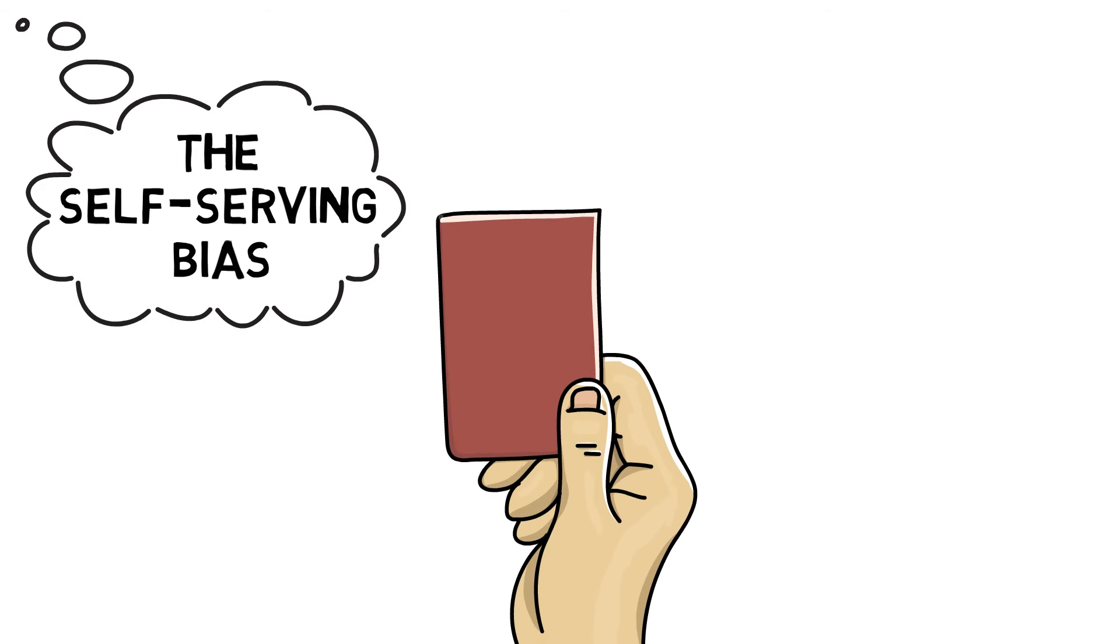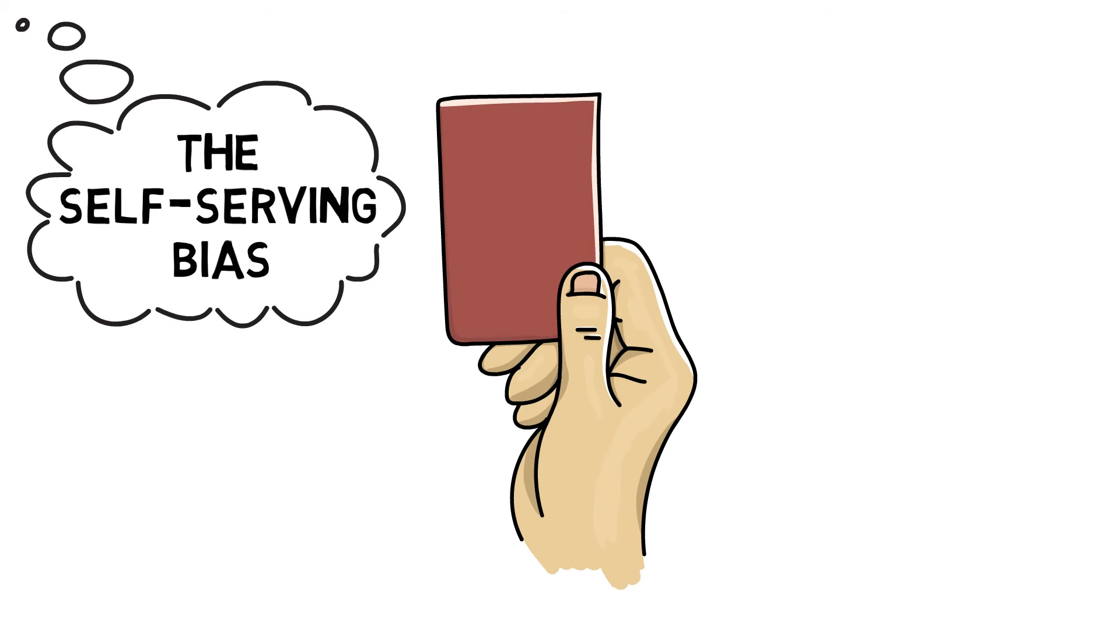The self-serving bias develops this further. Because failure is attributed to avoid internal and stable factors, factors are attributed to protect self-esteem, rather than reflect the reality of the situation.